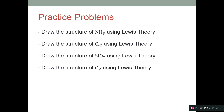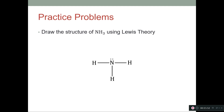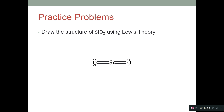Here are a few practice problems — try them on your own before watching the answers. For ammonia (NH3), the Lewis structure has nitrogen as the central atom with three bonds to hydrogen and one lone pair. For Cl2, it's a single bond between the two chlorines with lone pairs on each. For silicon dioxide (SiO2), it looks very similar to carbon dioxide since silicon and carbon are in the same column with similar bonding patterns, giving double bonds to each oxygen. For O2, the two oxygens are double bonded to each other. That was everything for this video.